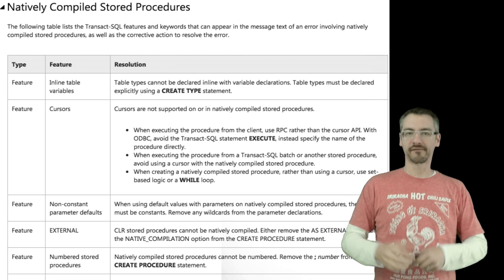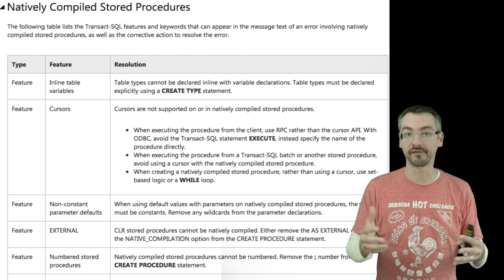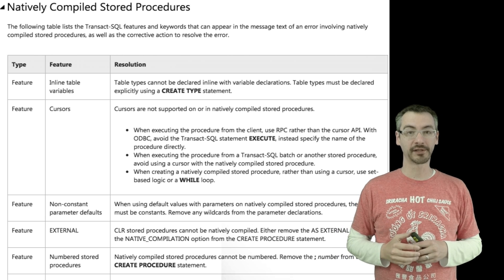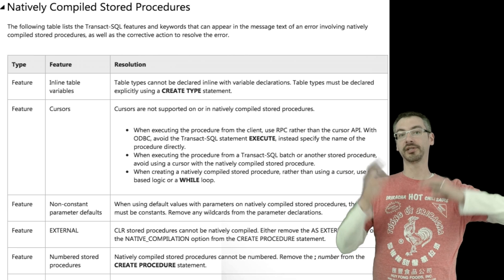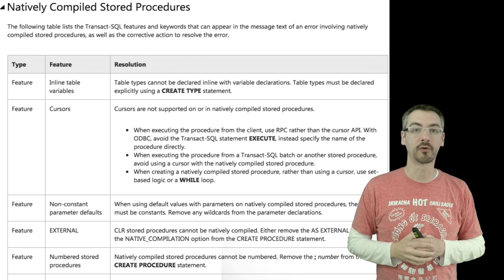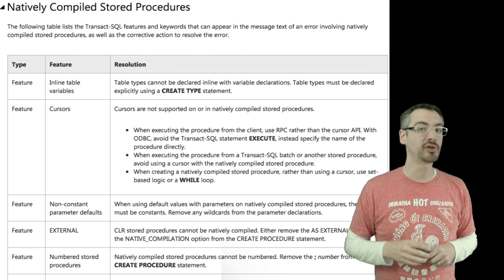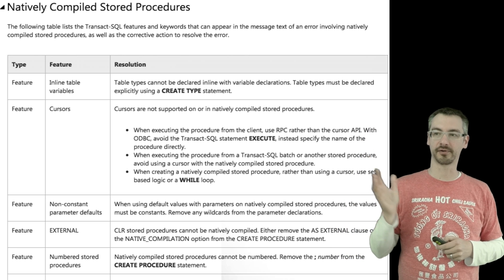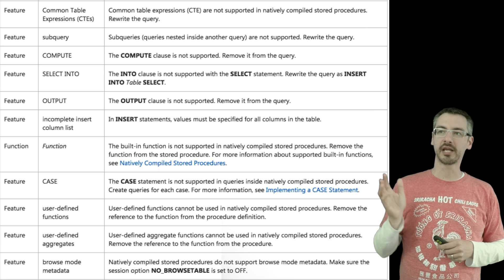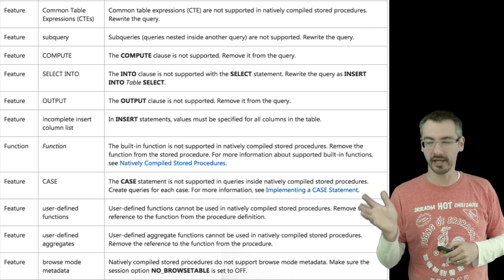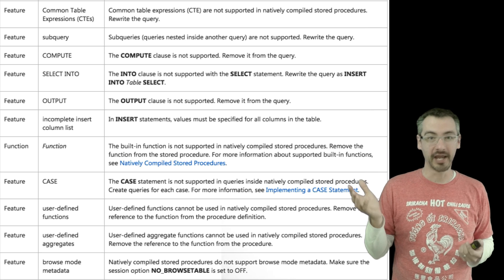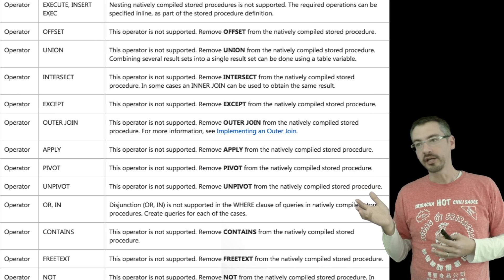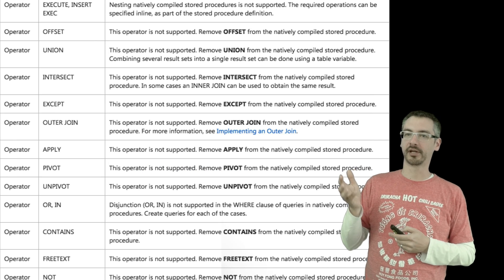Now let's talk about what happens when you put your T-SQL inside natively compiled stored procedures, which is supposedly one of the big benefits — making things insanely blazing fast once you compile your T-SQL. Turns out there are a few things you can't do in there as well: inline table variables, cursors, external numbered stored procedures, CTEs, subqueries, COMPUTE, INTO, SELECT INTO, OUTPUT, CASE — you can't use a CASE statement — user-defined functions, user-defined aggregates, OFFSET, UNION, INTERSECT, EXCEPT, OUTER JOIN, APPLY, PIVOT, and UNPIVOT.